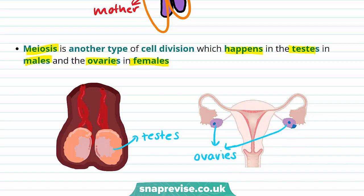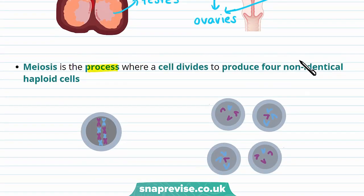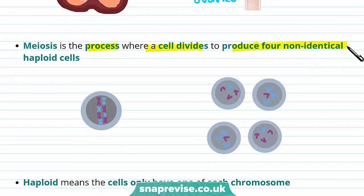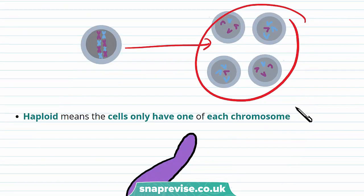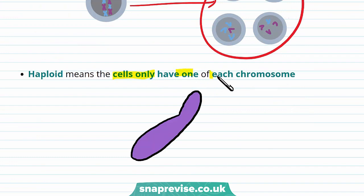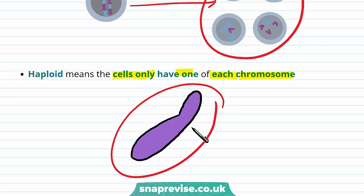So what exactly is meiosis? Meiosis is a process where the cell divides to produce four non-identical haploid cells. Meiosis produces cells which are genetically non-identical. Haploid just means that the cells only have one of each chromosome, and this means in the nucleus the chromosomes look like this.